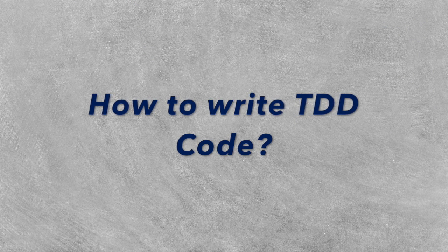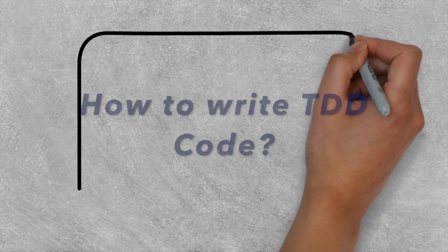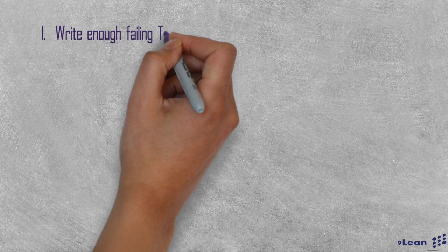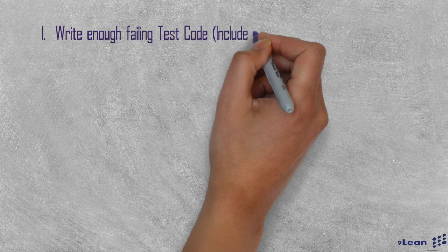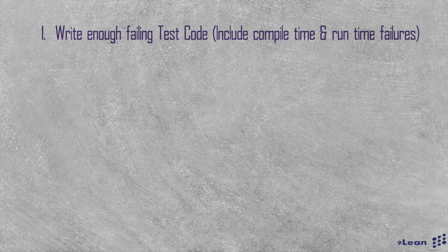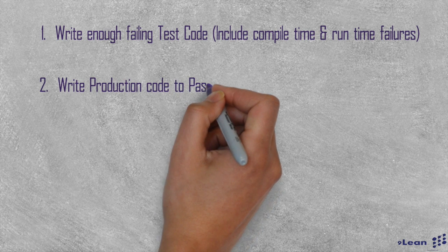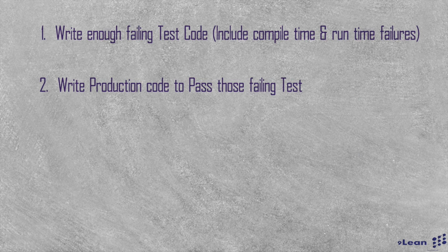Now let's see how to do TDD. There are four steps. Step 1 is to write enough failing test code, including compile time and runtime failures. Step 2 is to write production code to pass those failing test cases which we got as part of step 1.